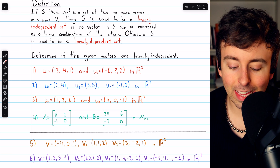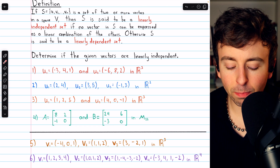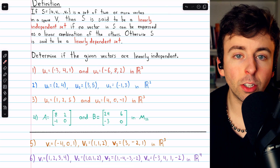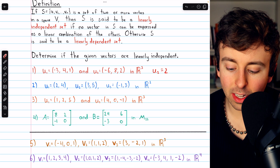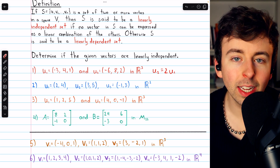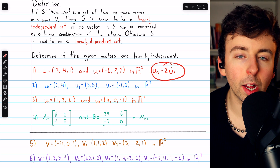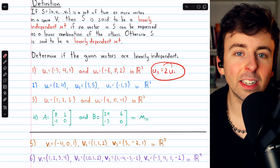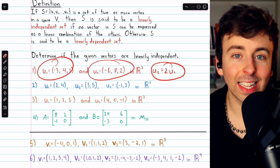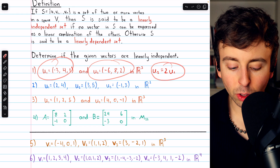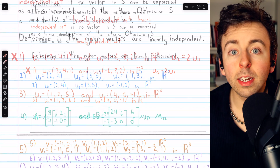In this case, yes, because U2 is simply U1 multiplied by 2. So indeed, we can express one vector as a linear combination of the other — U2 equals 2U1. Hence, this is not a linearly independent set of vectors. These two vectors are not linearly independent, so I'll put an X next to this one.